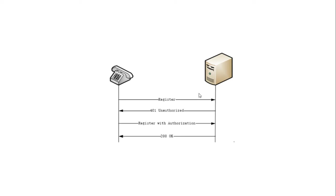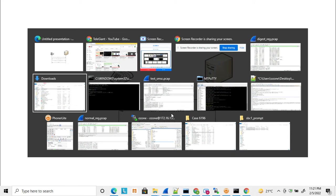The second type is called digest authentication. In this flow, the soft phone or IP phone sends a REGISTER message to the EPBX. The EPBX returns 401 Unauthorized. The phone then sends a new REGISTER message with an authentication header. If authentication is successful, the EPBX responds with 200 OK — this is the digest authentication registration flow.